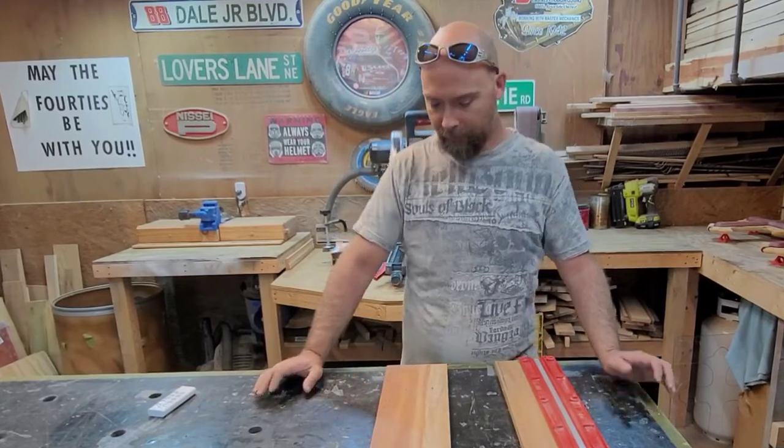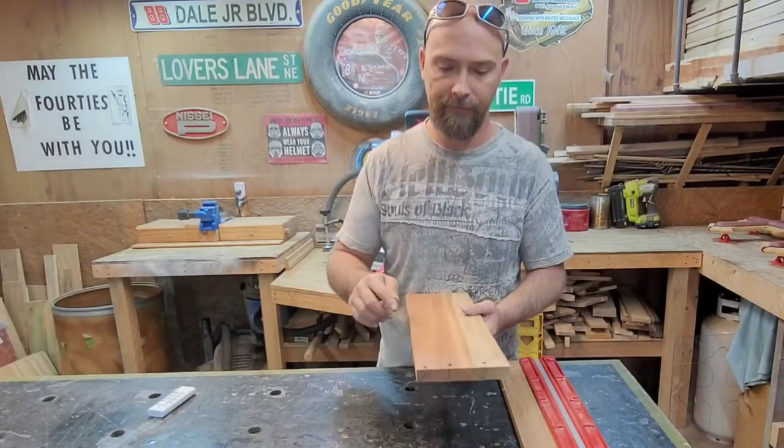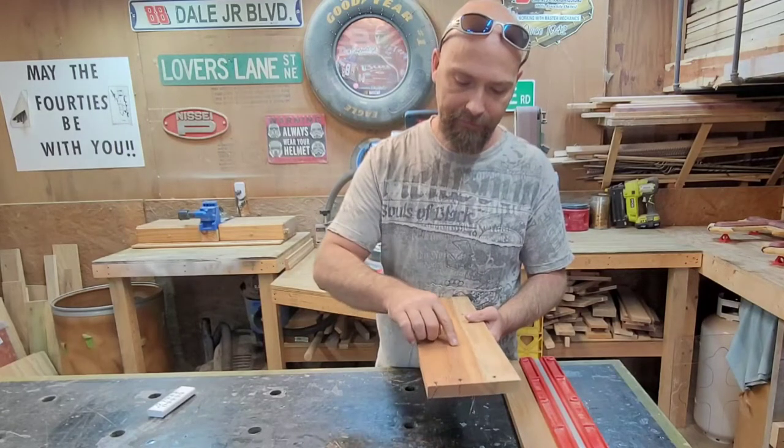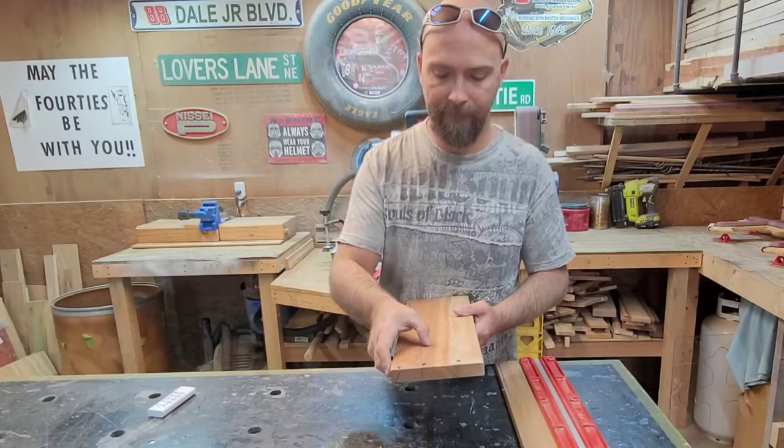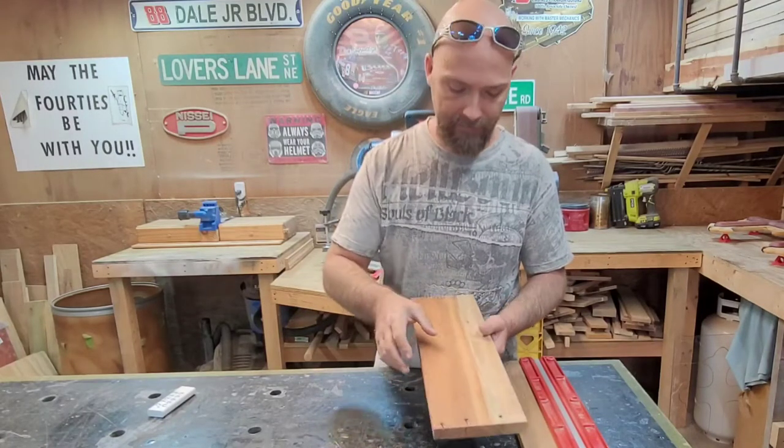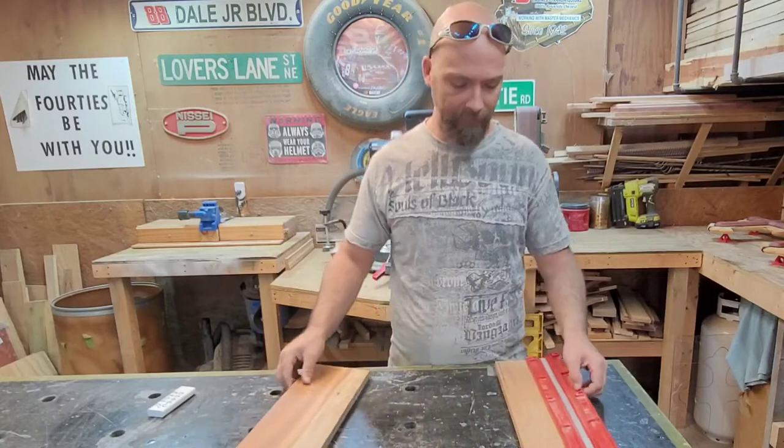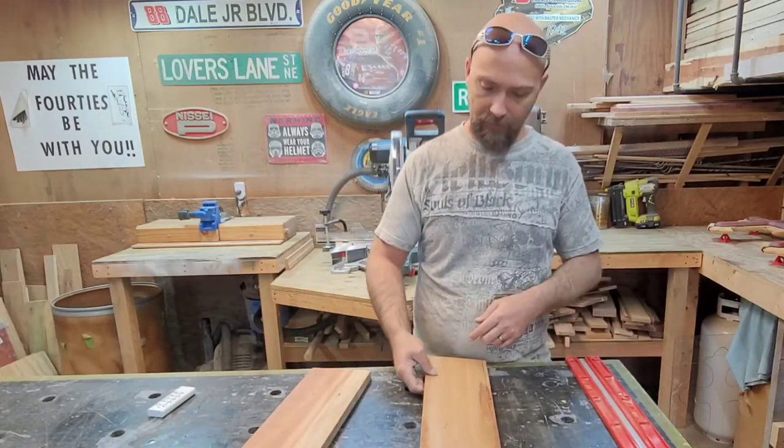So after a closer inspection of this particular board, I'm not going to throw it away yet. There's a crack here and it comes right into where my plate will fit and I don't really like that. So I found this other piece of Osage Orange and there are no cracks.